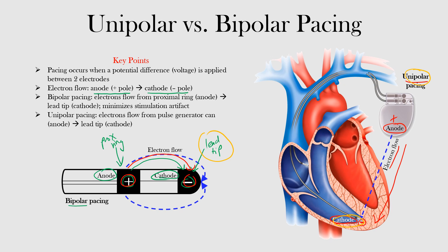Furthermore, currents flowing from the pulse generator can into the lead tip may stimulate excitable tissue between the two, and this can result in large stimulation artifacts that we see on the EKG. In bipolar pacing, the anode and cathode are located within the heart, which helps to minimize this stimulation artifact.